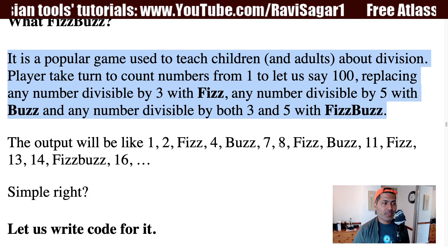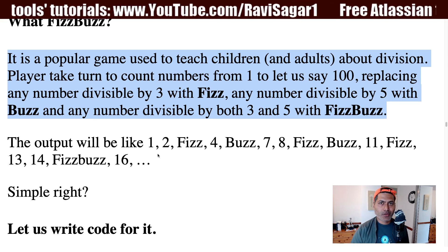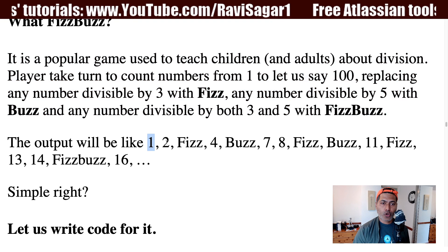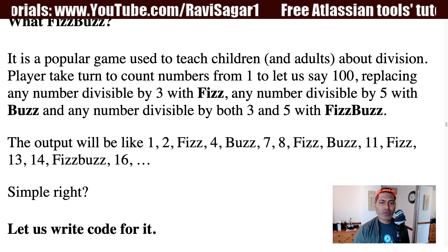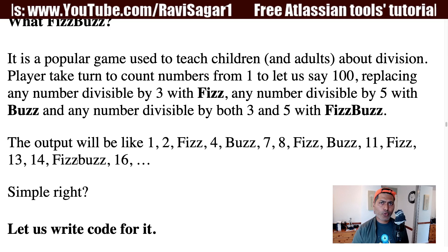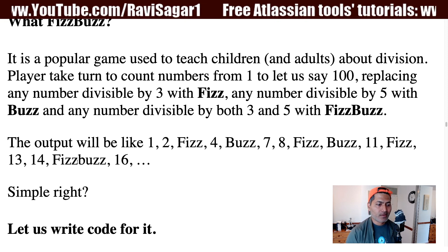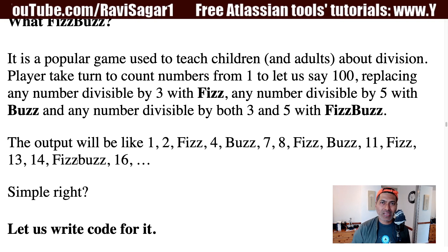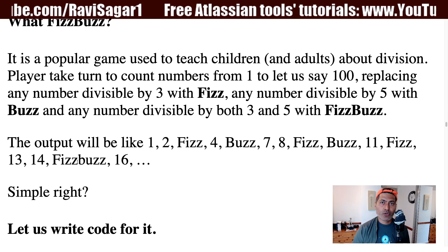So if you are playing this game, you can start with 1 followed by 2, then 3 is divisible by 3 so you say Fizz, then 4, then 5 so you say Buzz, 7, 8, and so on. When you reach 15, you have to say FizzBuzz. It is a good way to learn divisions because you have to do these calculations very quickly, instantly in your mind. You learn about numbers that can be divided by either 3 or 5 or both.